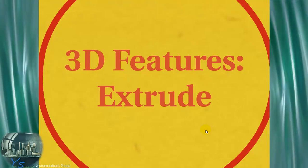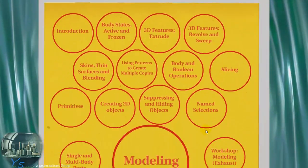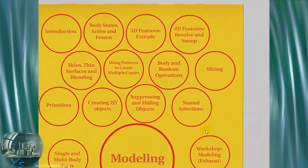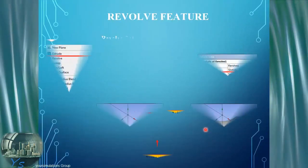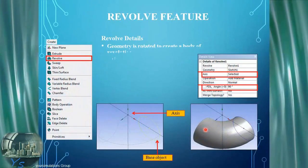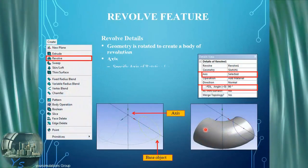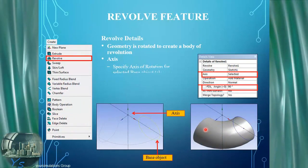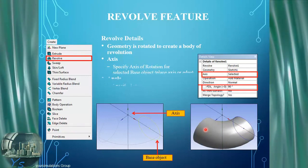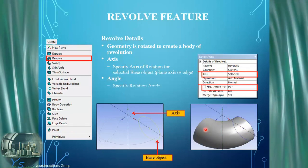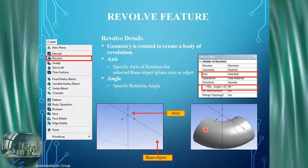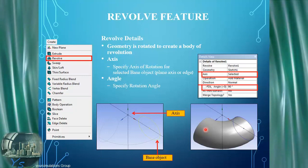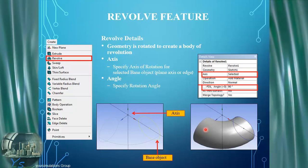Moving down the 3D modeling operations from extrude into revolve, here are some details of the revolve operation. Essentially we're taking a sketch and revolving it around an axis by a particular angle in order to form a 3D body.